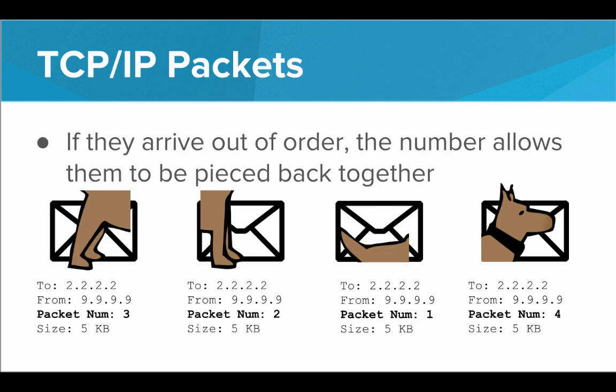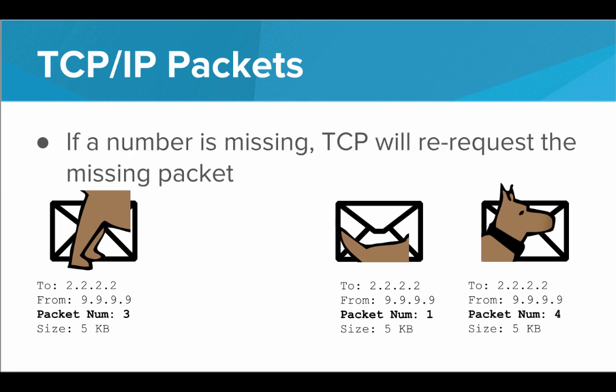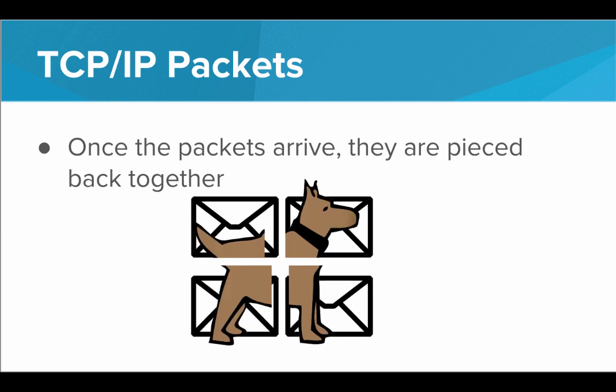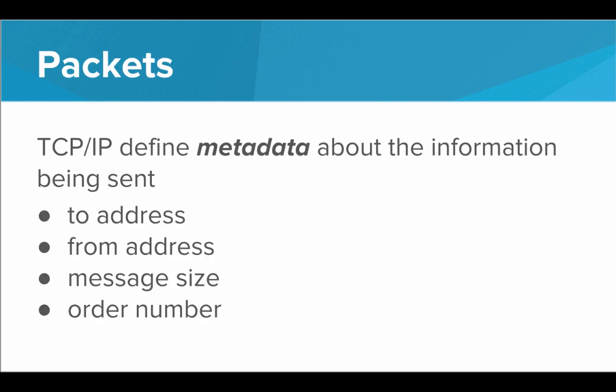Now that the packets are labeled with a number, once they arrive, if they're out of order, it's okay — we know how to put them back together because we have the proper order. This is also useful because if one of the packets doesn't make it — let's say one of the routers crashes — TCP will re-request that missing packet. Once all the packets arrive, we have their order number, so we know how to put them back together to create the final result. So TCP and IP define metadata about the information being sent: the to address, the from address, the size of the message, and the order number.